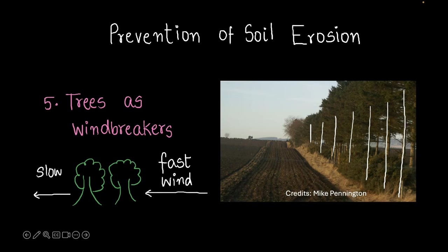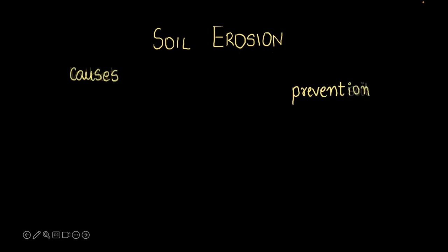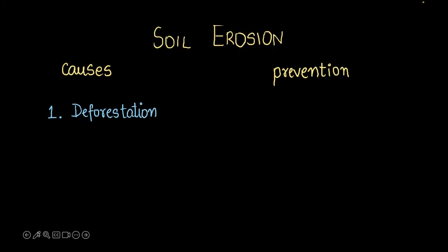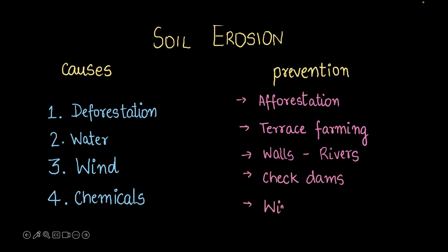So let's summarize. We wanted to answer a few questions. We've answered question one, what soil erosion is. We've answered question number two, why it's an issue. And now let's quickly summarize the causes and the preventions. The causes were deforestation, water, wind, and chemicals. The preventions that we discussed were afforestation. This step is the most important of them all. Terrace farming or step cultivation. And we discussed walls for rivers so that they don't erode the sides of the banks. We also discussed check dams and windbreakers. That's it for this video.